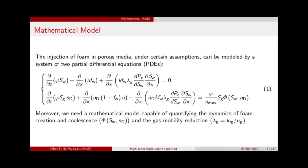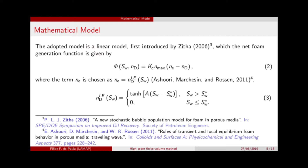We assume a rigid porous media and incompressibility — a strong hypothesis, but this is a preliminary first estimate. We neglect thermal effects and gravity effects. The uppercase term here is our Foam Injection source term. For that, we adopt a linear estimation proposed by Zeta in 2006, where Nf is defined as NDLE. NDLE is the foam texture — the bubble density of a foam in local equilibrium — defined when the generation and destruction of foam are equal. It is a water saturation function, essentially a step function.